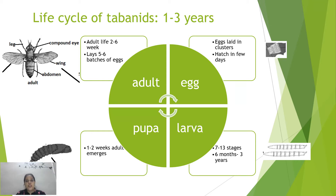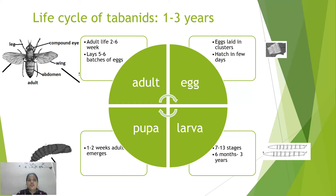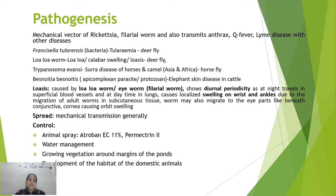After the fully mature larva, pupation occurs, and after one to two weeks an adult emerges. The complete life cycle of tabanids takes one to three years, with the larval instar stages taking six months to three years, having approximately seven to thirteen instars, while the adult lifespan is only two to six weeks. Regarding pathogenesis, tabanids are mechanical vectors of Rickettsia or filarial worms and transmit anthrax, Q fever, and Lyme disease.